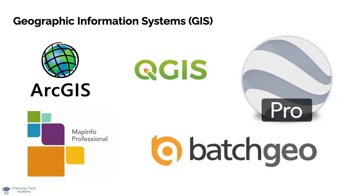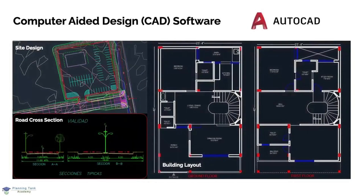CAD, or Computer-Aided Design, enables its users to design, analyze, create, and visualize things with the help of computers. It increases productivity and saves time. CAD softwares are widely used in variety of fields including allied fields of planning like civil engineering, architecture, and urban design. In planning, these help the planner to design spaces which require details that cannot be covered in GIS, like site design, road cross-sections, site and housing layouts, sector layout designs, and basic modeling.